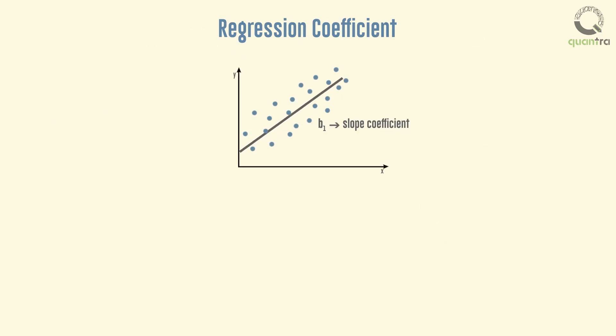The slope coefficient b1 of the regression line is calculated as covariance of x and y divided by the variance of x, and the intercept coefficient is the line's intersection with the y-axis at x equals 0.